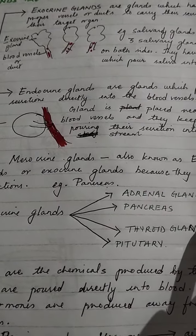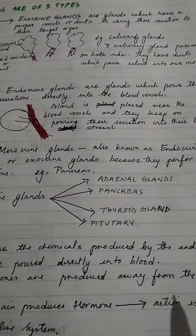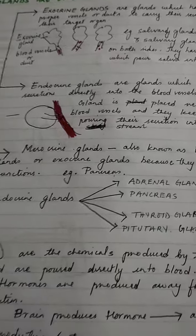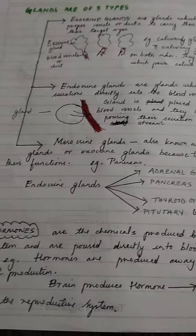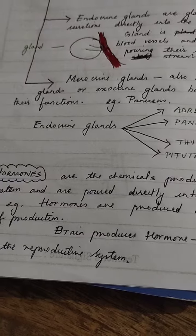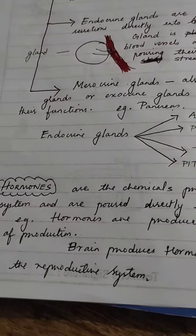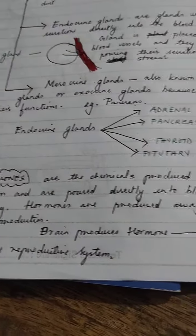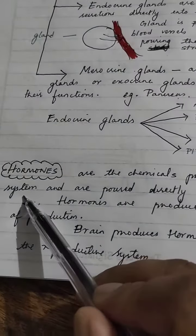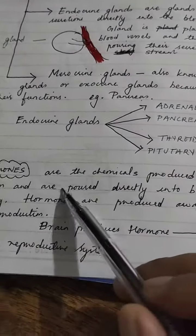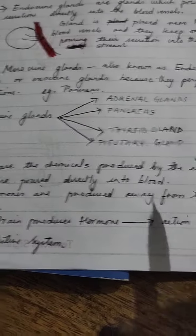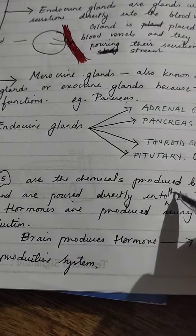Now let us understand hormones. Hormones are chemicals produced by the endocrine system and are poured directly into the blood.